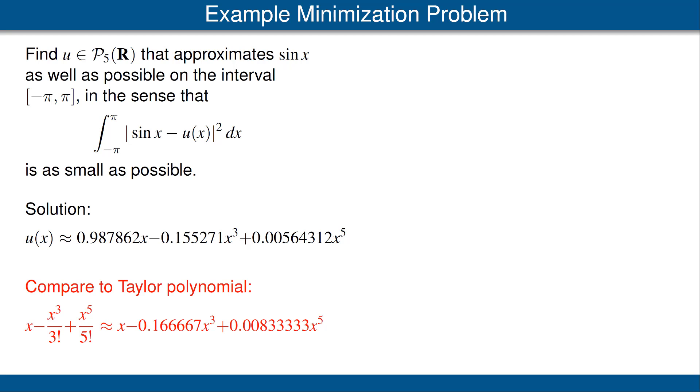Comparing the Taylor polynomial in the last line to our solution, we see that in our solution the first coefficient starts off with 0.9878, whereas the Taylor polynomial, the coefficient is close. It's 1, but not exactly the same.